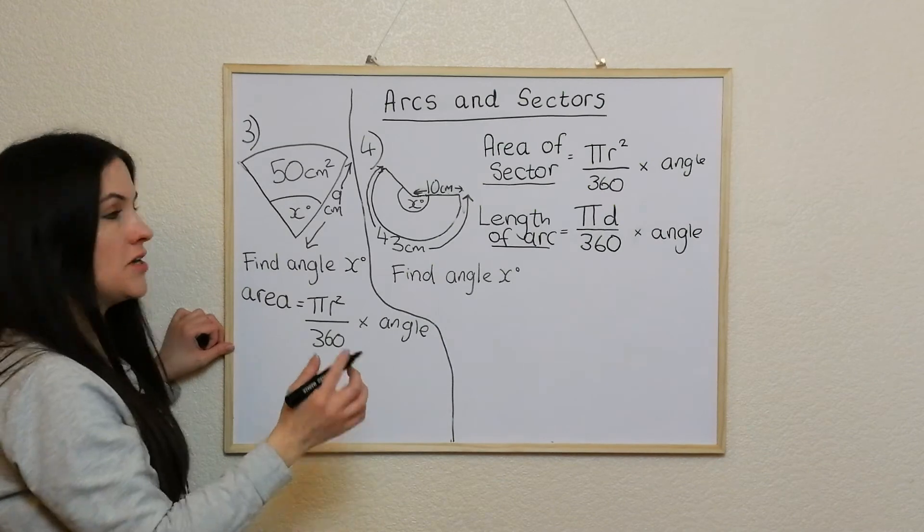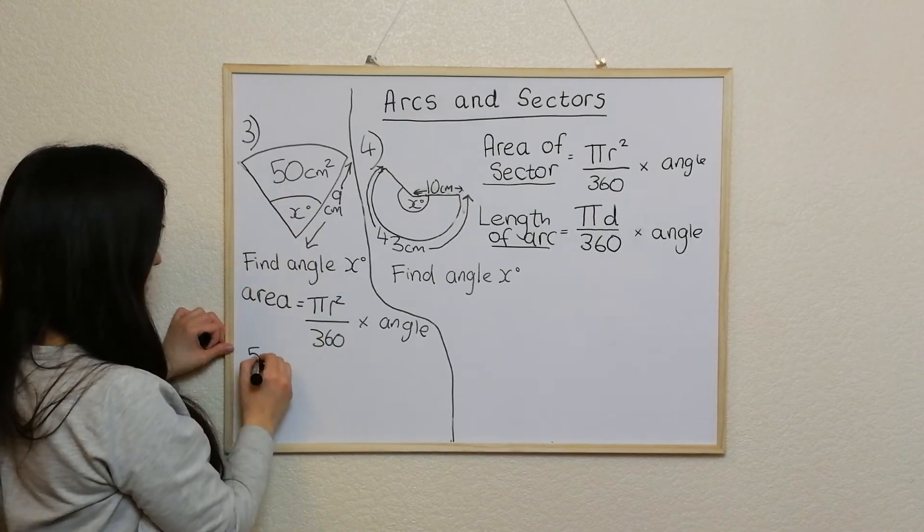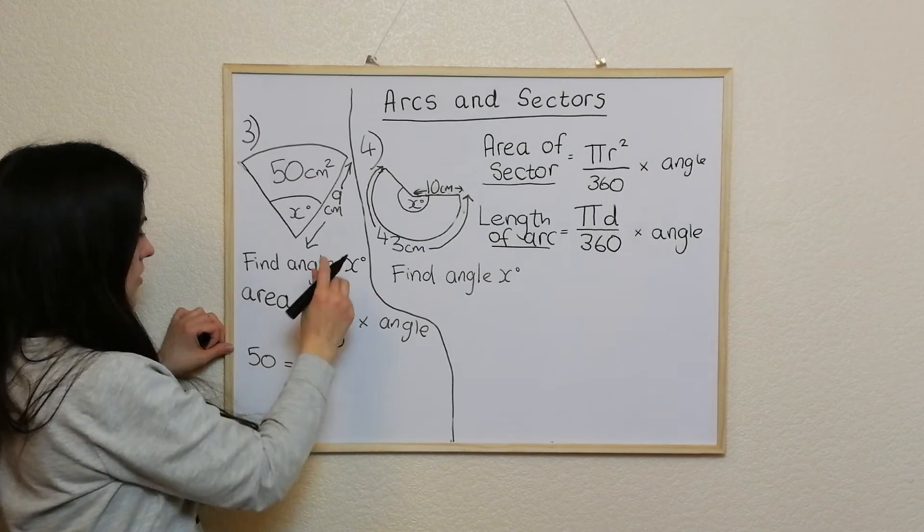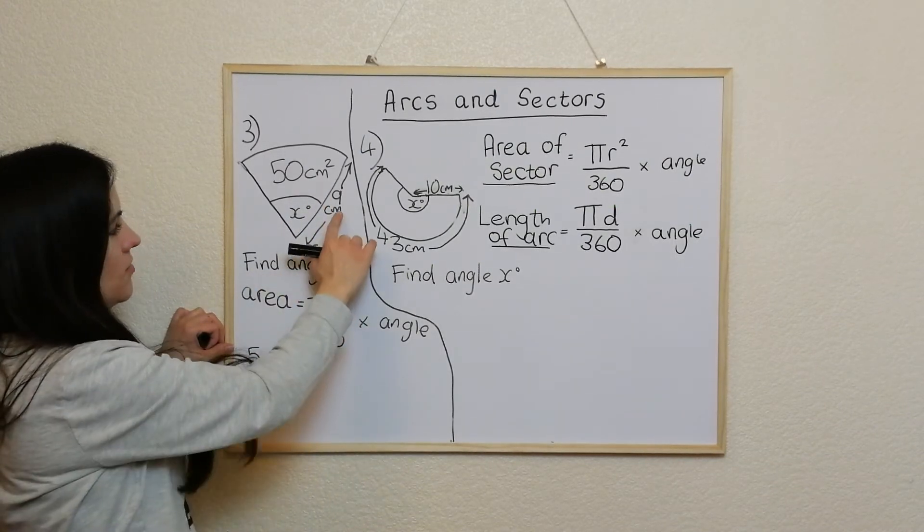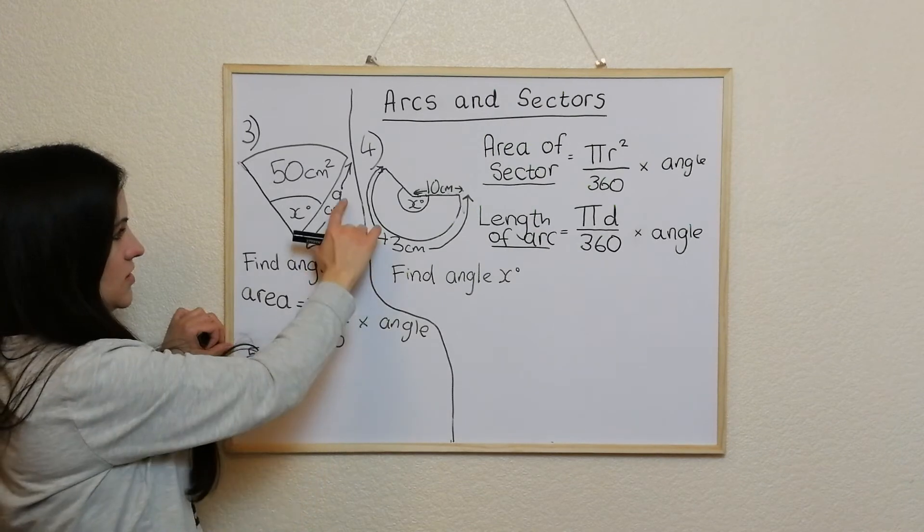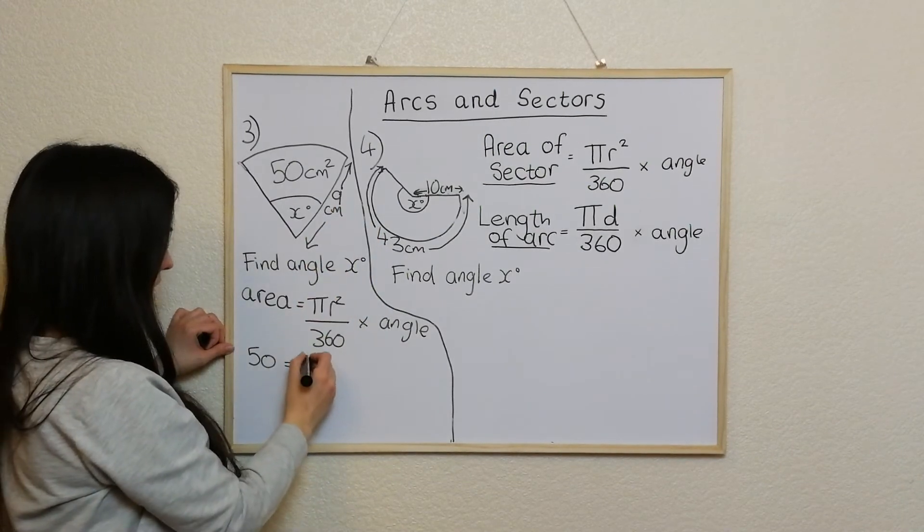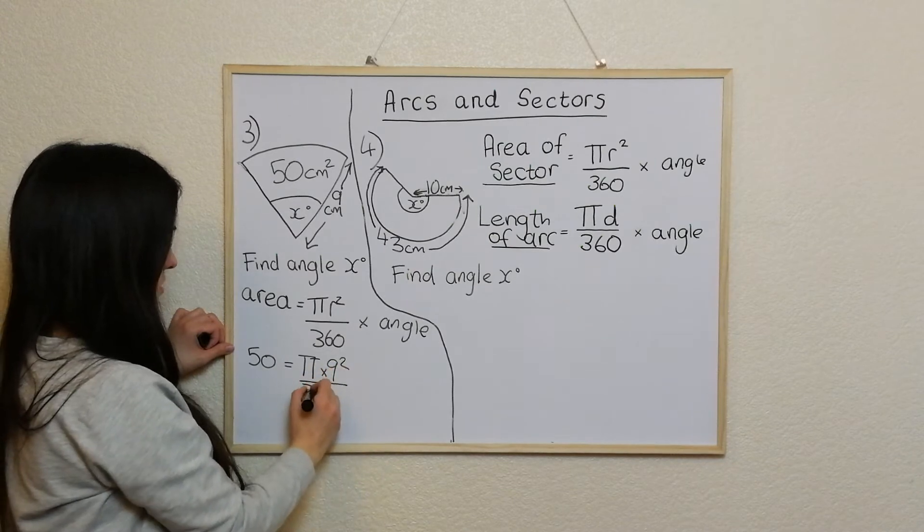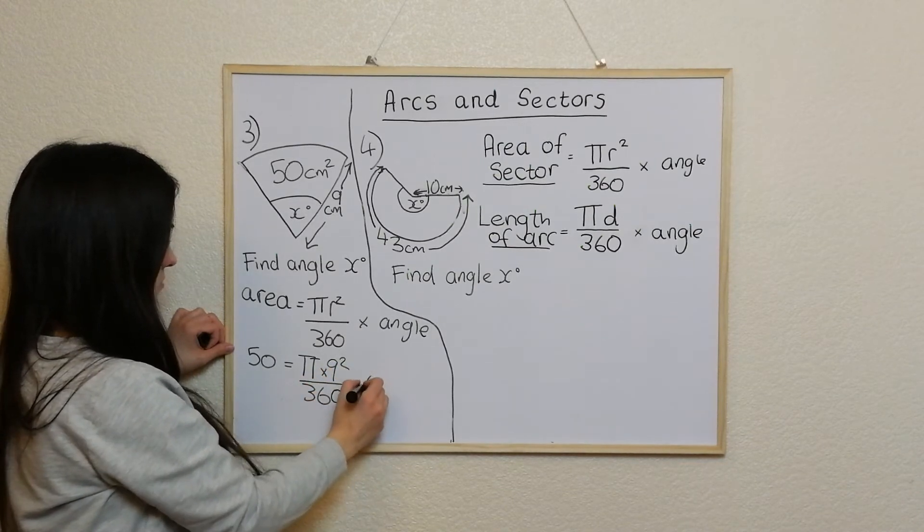The information I've got here is the area, so I'm going to write that in. I'm not worried right now about writing centimeter squared. We've already got the radius, so we've got 9. So I'm going to say pi times 9 squared over 360 times angle.